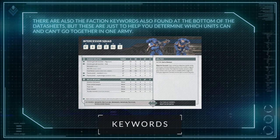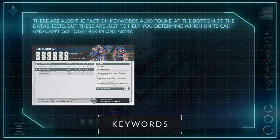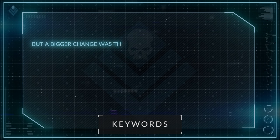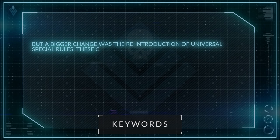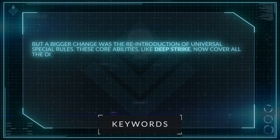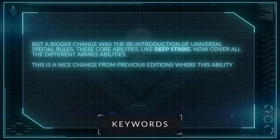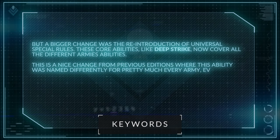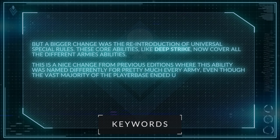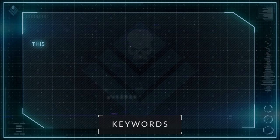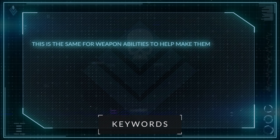Faction keywords are just to help you determine which units can and can't go together in one army. For example, you can bring any number of Adeptus Astartes keyword units in an army, but you aren't able to bring Marnius Kalgar, who has the Ultramarine faction keyword, with Vulcan Hestan, who has the Salamanders faction keyword. But a bigger change was the reintroduction of universal special rules. These core abilities like Deep Strike now cover all the different armies' abilities.